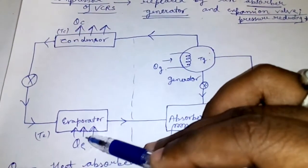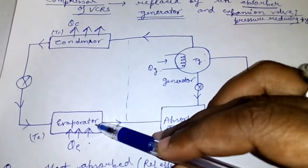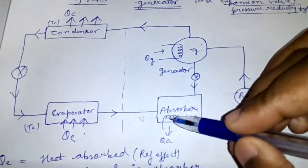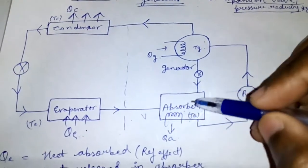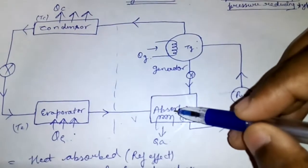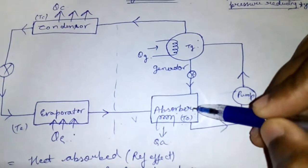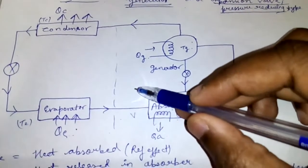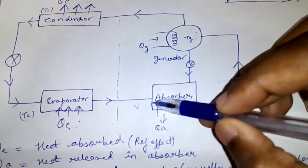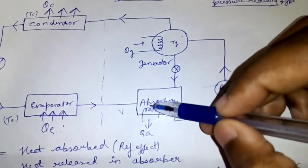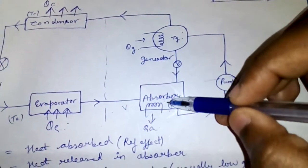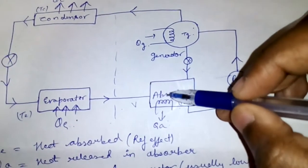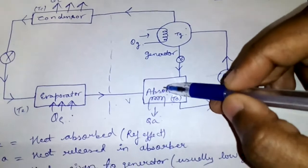The heat is absorbed by the liquid refrigerant present here. It gets converted into the vapor form. The vapor travels here to the absorber. Here absorbent is present. This absorbent should have high affinity for these vapors which are coming from this direction.